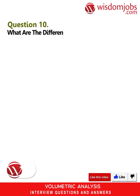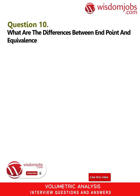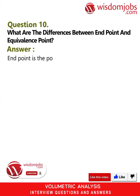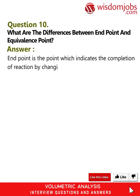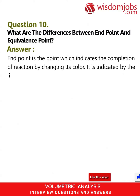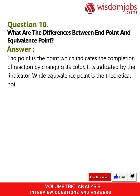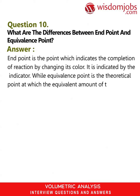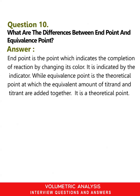Question 10: What are the differences between endpoint and equivalence point? Answer: The endpoint is the point which indicates the completion of a reaction by a change in color; it is indicated by the indicator. The equivalence point is the theoretical point at which equivalent amounts of titrant and titrand are combined together; it is a theoretical point.